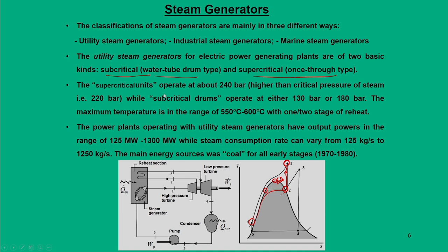Supercritical unit boilers operate at about 240 bar, just higher than the critical pressure, while subcritical units operate in the range of 130 to 180 bar, with maximum temperatures in the range of 550 to 600 degrees centigrade. These units produce power in the range of 125 to 1300 megawatts, for which the steam consumption is about 125 to 150 kg per second. The energy from coal is used to produce this power.